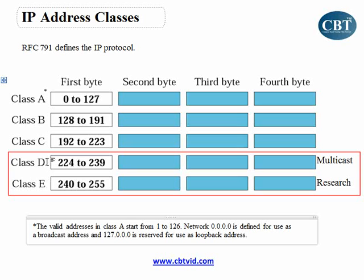If you study routing and routing protocols, you'll see how some addresses from Class D come into the picture, as some routing protocols use these multicasting addresses. But for now, we're going to stick to Class A, Class B, and Class C. What is the difference between these classes, and how can I find out which class an IP address belongs to?